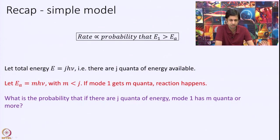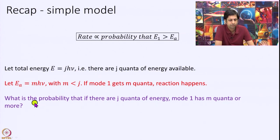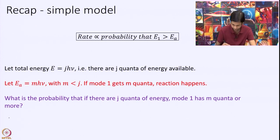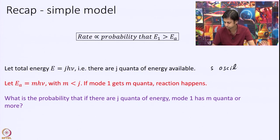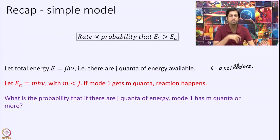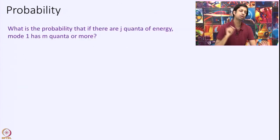We assume that the total energy E corresponds to some quanta j·hν and Ea is given by m quanta of energy. What we are really asking is: what is the probability that if I distribute j quanta among s oscillators, the first mode will get m quanta or more? Today we are going to calculate this probability.